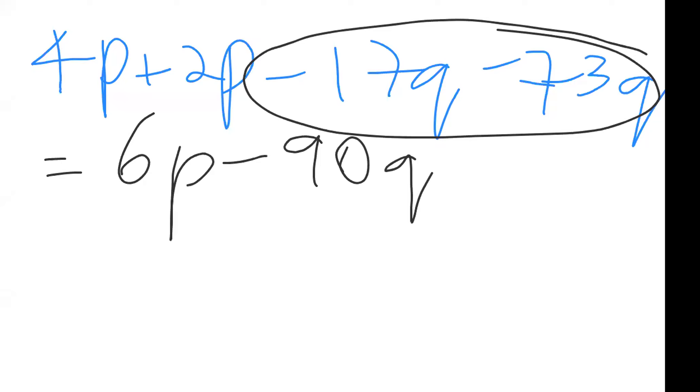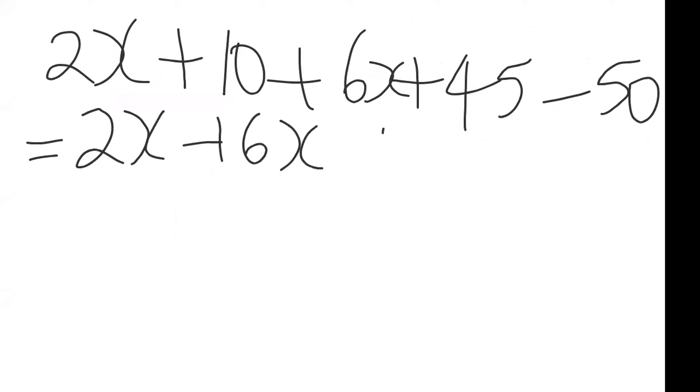Next we have 2x plus 10 plus 6x plus 45 minus 50. So most persons would have grouped like terms: 2x plus 6x, plus 10, plus 10. I addressed the fact that you need to maintain the signs that are in front of them already. 2x plus 6x gives 8x, most persons did that.